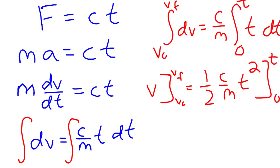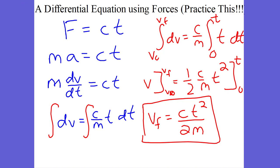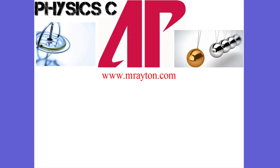We're going from t final from zero. If we're starting from an initial velocity of zero, that initial velocity is zero, so we can just call this final velocity. Final velocity equals ct squared over 2m. That is what our final velocity would be at any point in time under a varying force. I hope this helped. This was the first segment of Dynamics. Have a good day, I'll catch you later. Bye.